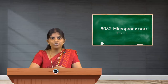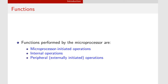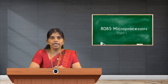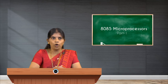Coming to the functions of the microprocessor — any microprocessor performs three different functions. The first one is microprocessor-initiated operations, the second one is internal operations, and the third one is peripheral or externally initiated operations.